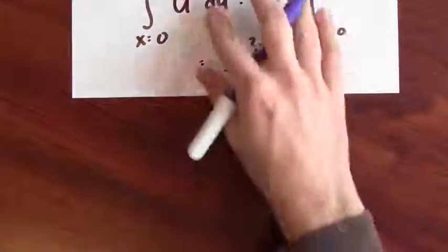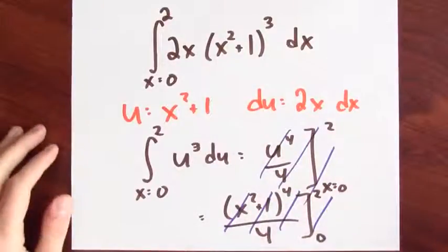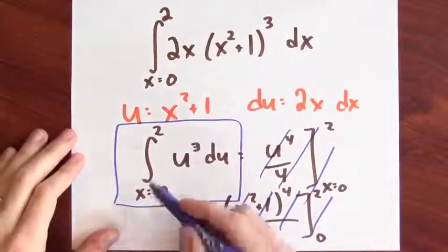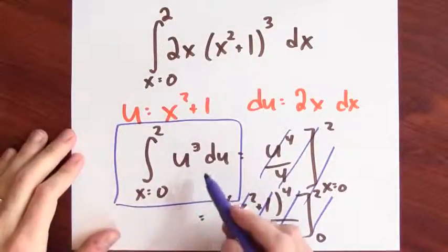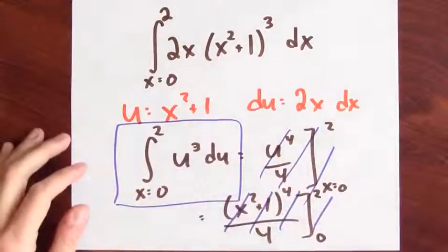But I could have finished this problem off in a slightly different but equivalent way. Let's back up. I'll get rid of this. And let's suppose that I didn't go down this path, but I just stopped here. The problem is that my endpoints are in terms of x, but my integrand now is in terms of u. So I'm just going to change those endpoints.